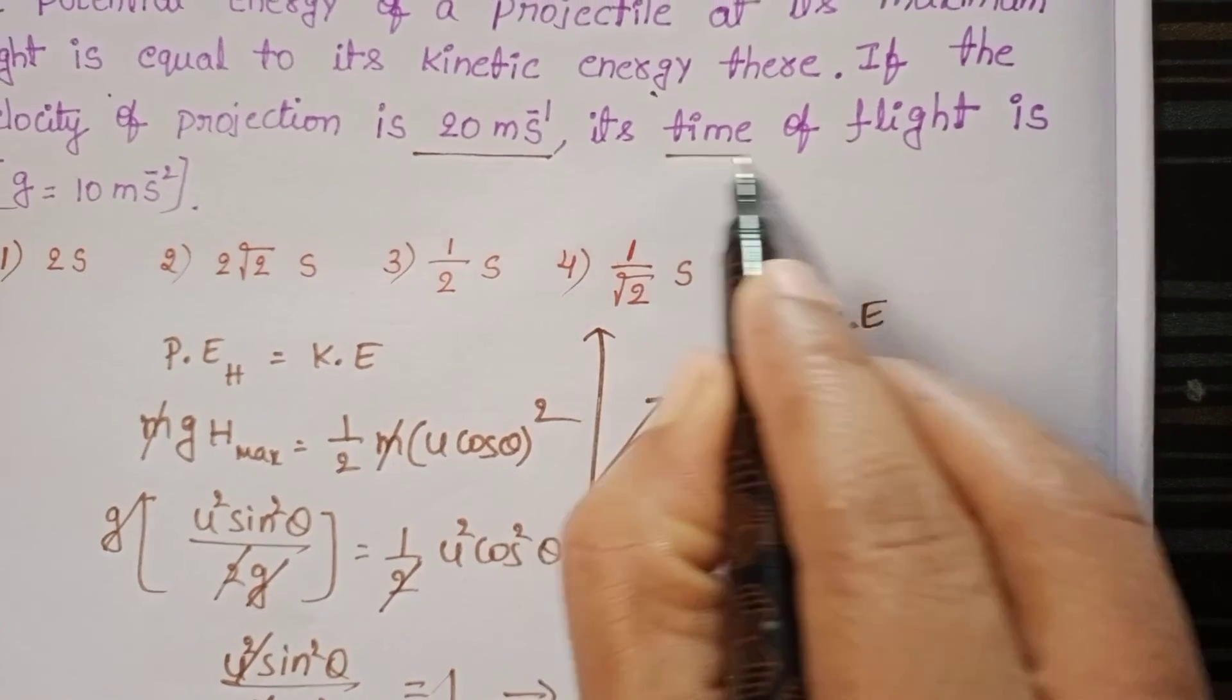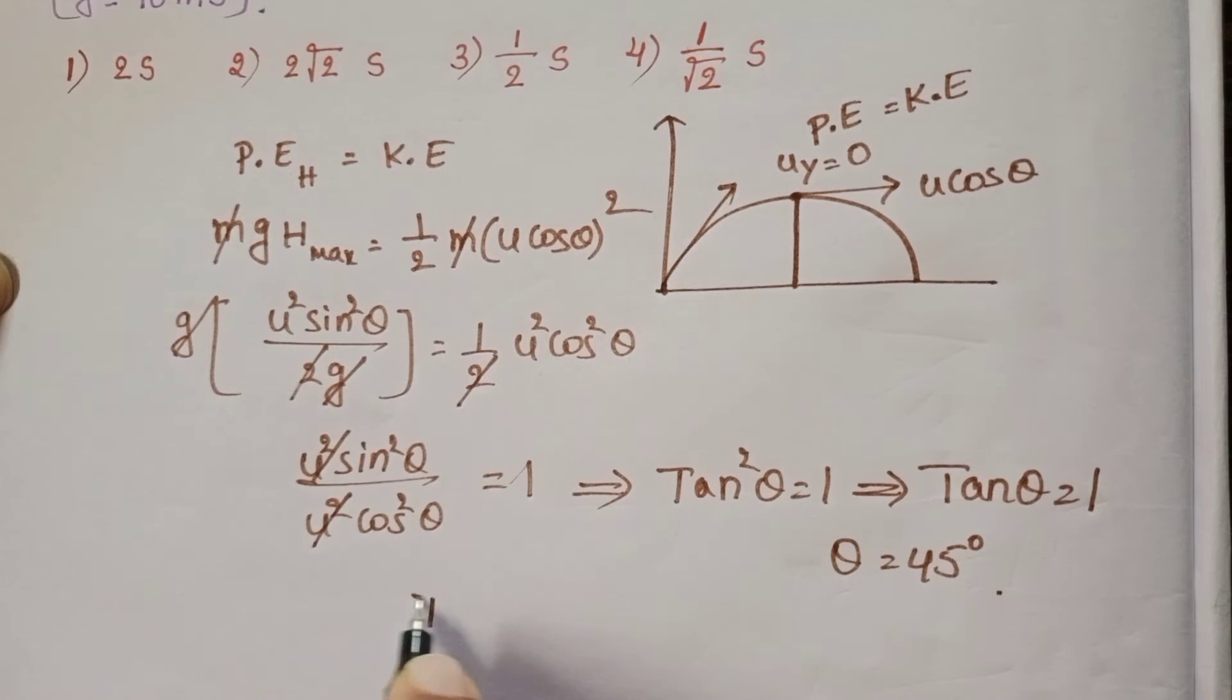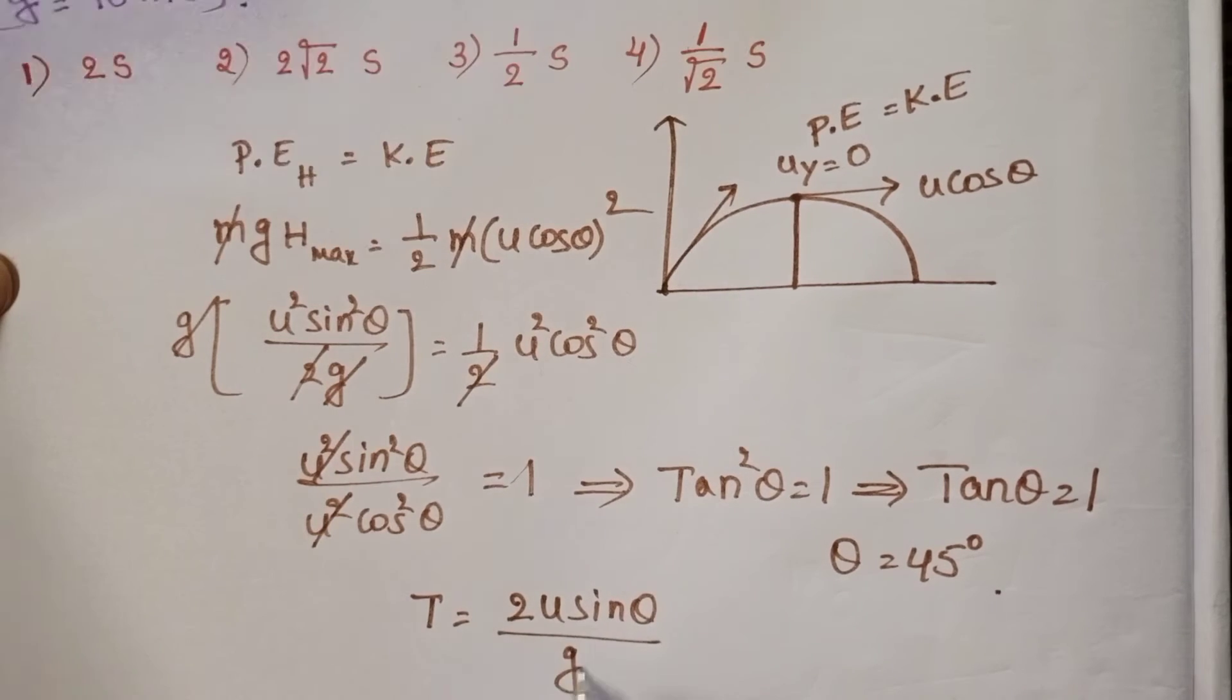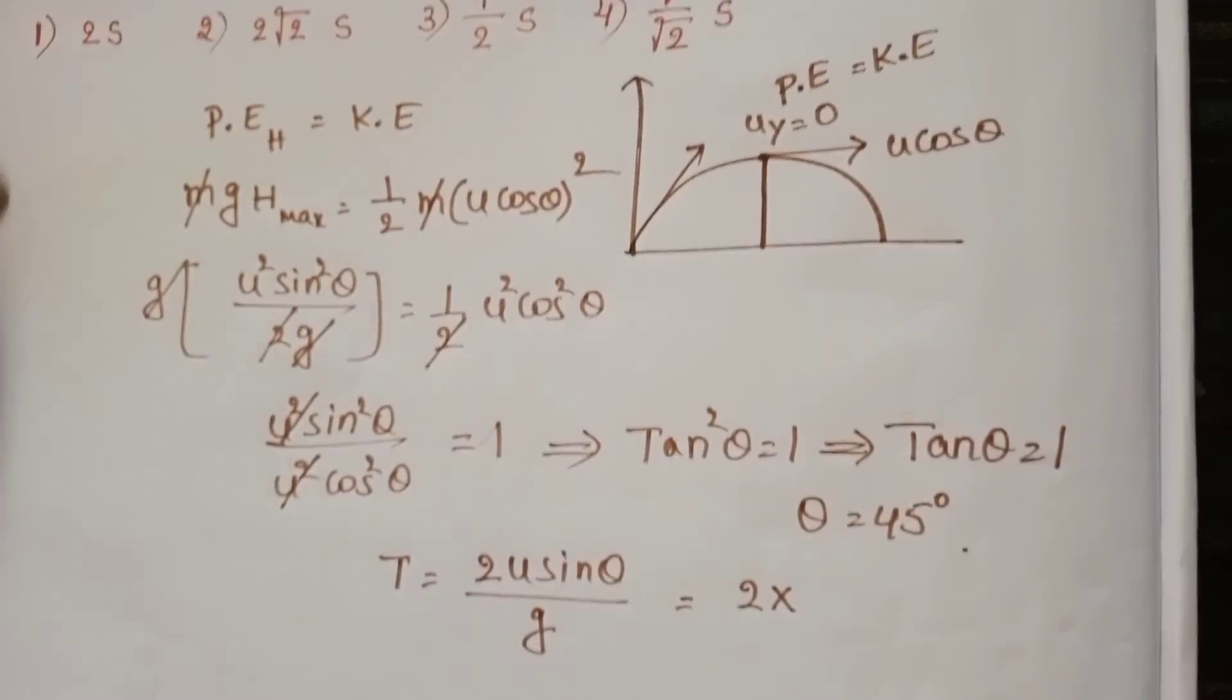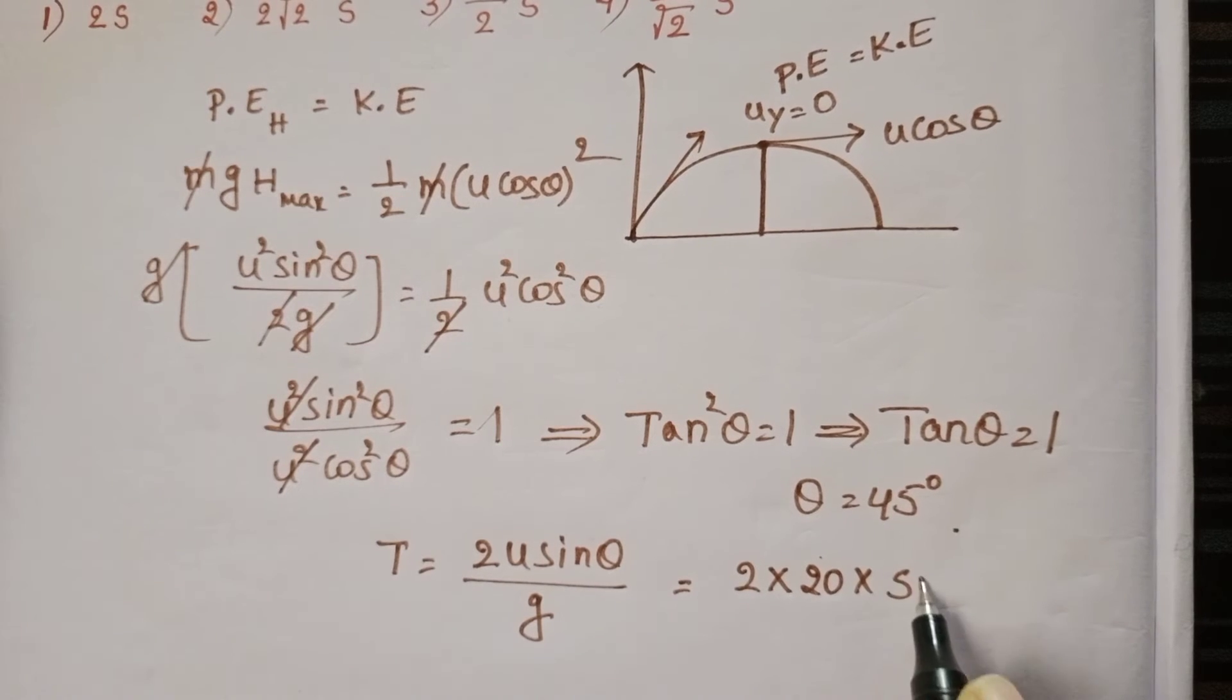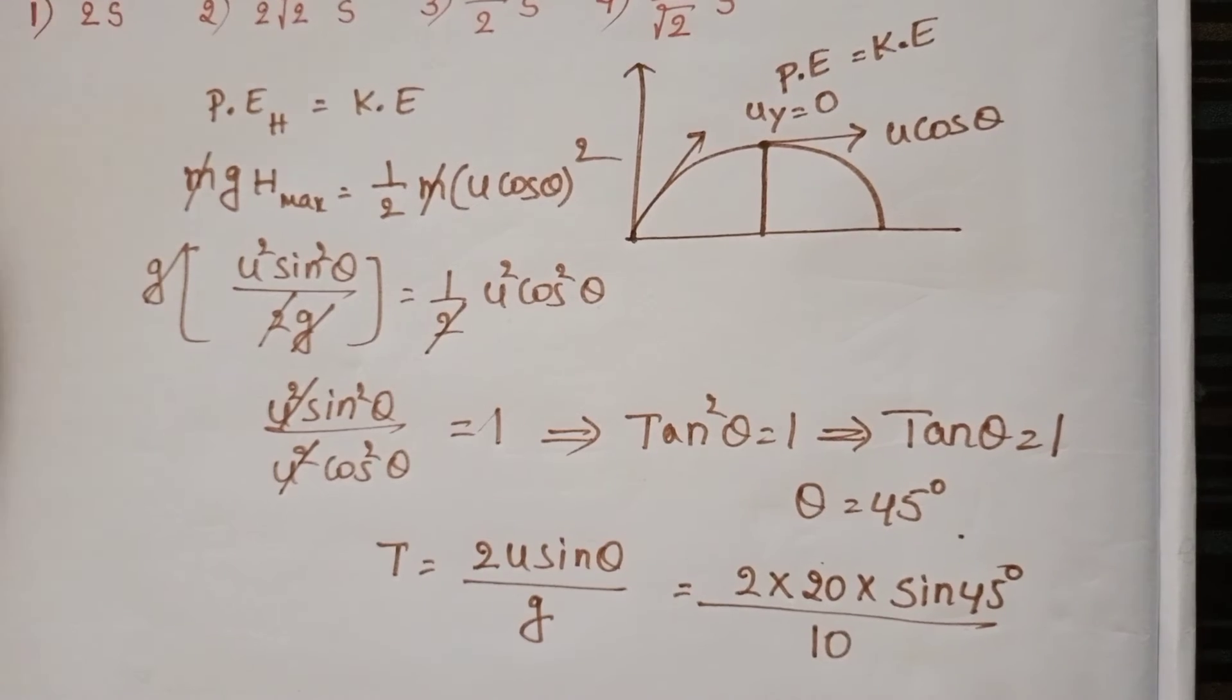We want the time of flight. The time of flight formula is 2u sin θ / g. Substituting 2 times velocity 20 meters per second: (2 × 20 sin 45°) / g, where g equals 10.